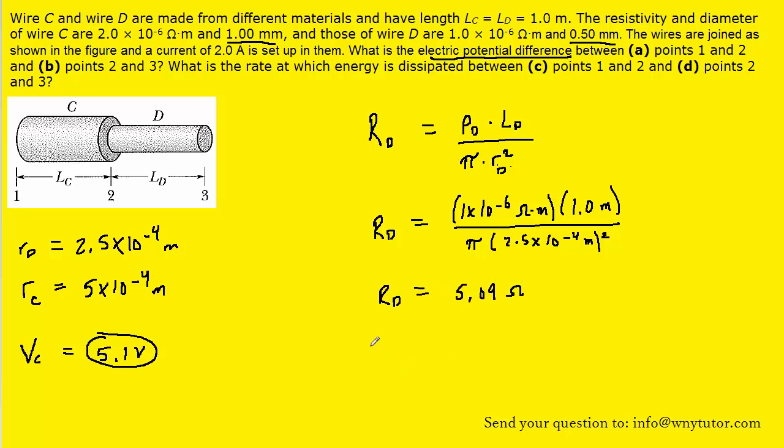The potential difference will therefore be the current multiplied by that resistance. The current, once again, is 2 amps. And then when we multiply these values out, we end up with approximately 10.2 volts. So this is the correct answer for part B of the question.